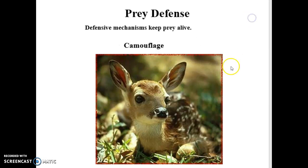Look at the white-tailed deer. That little baby fawn born in April or May is spotted, so it blends into the environment — it's camouflaged. You can hardly see those little deer when they're young because they hide, blend in, and tuck down into the grass, and predators don't even know they're there. That's because of their genetics, their DNA, inherited from mom and dad. If mom and dad had camouflage that enabled them to survive, they pass on that adaptable trait to their offspring, increasing their chances of survival.